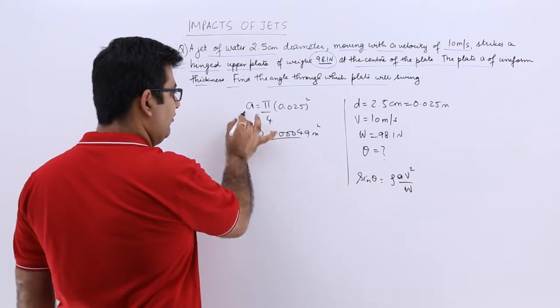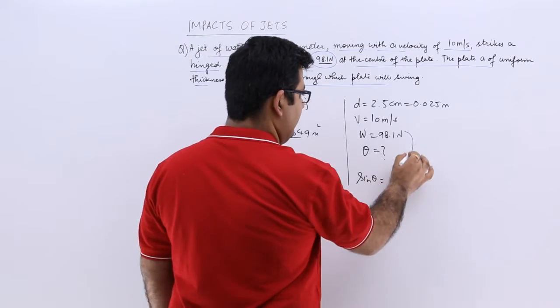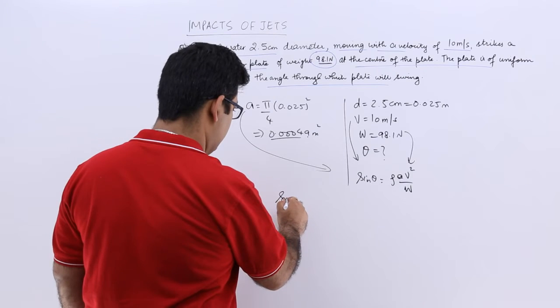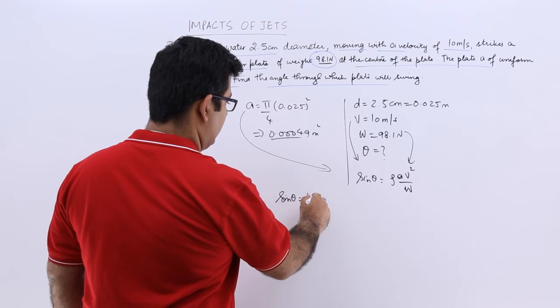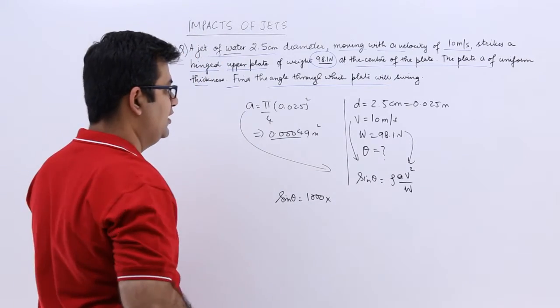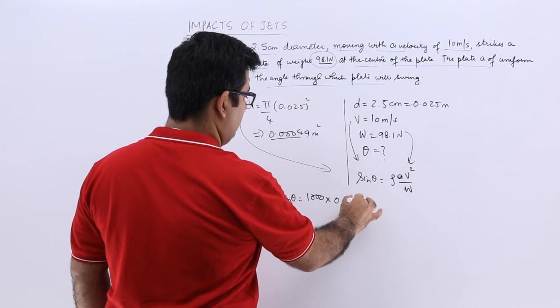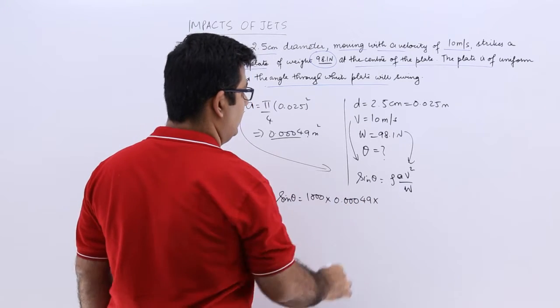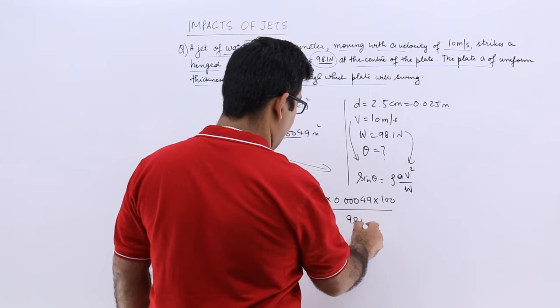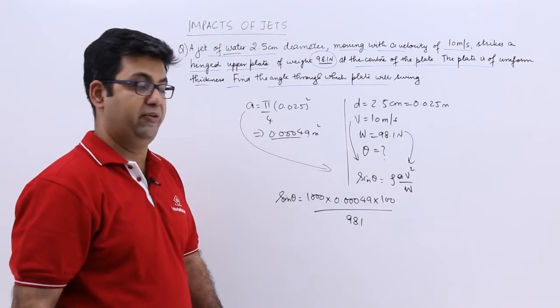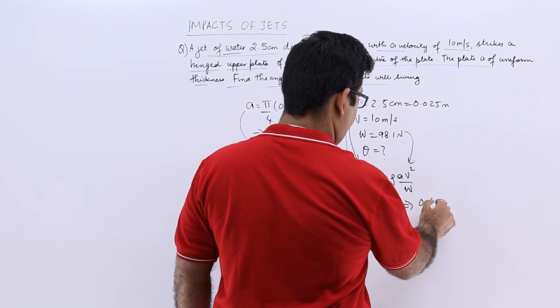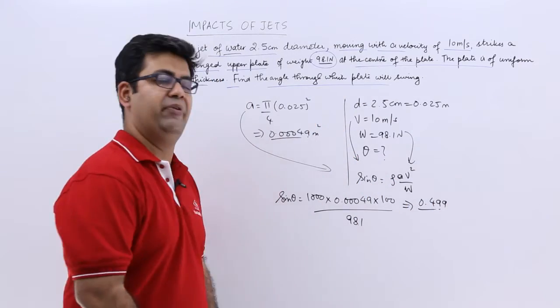So let's put the value of A, the value of W, and the value of v. You will get sin theta as 1000 because it is water. The area is 0.00049 into velocity square, that is 100, upon 98.1 newtons. When you solve this you get 0.499, almost 0.5.